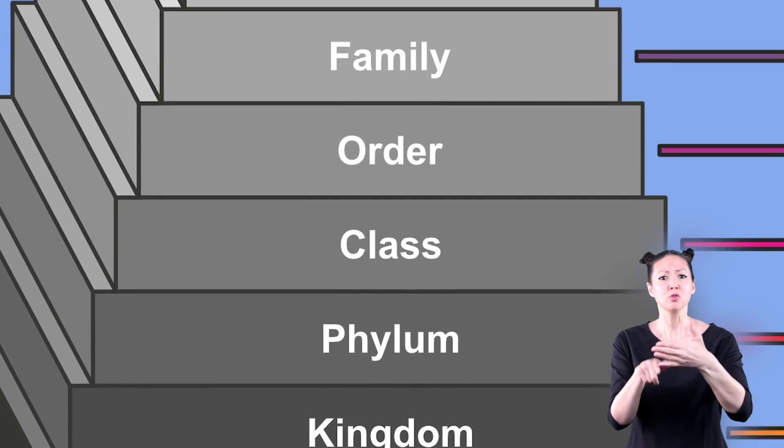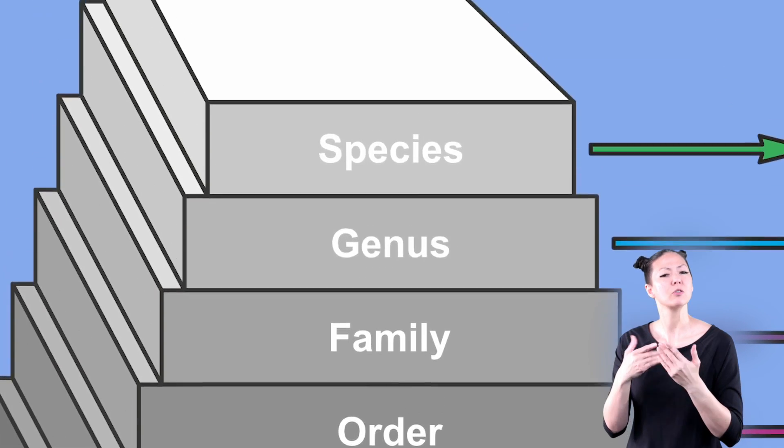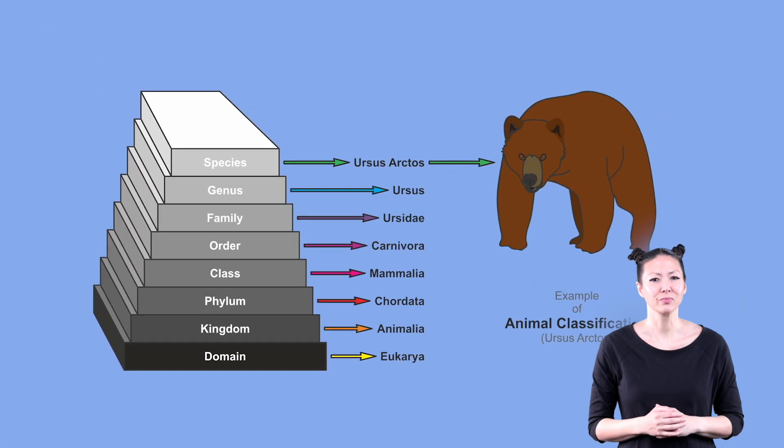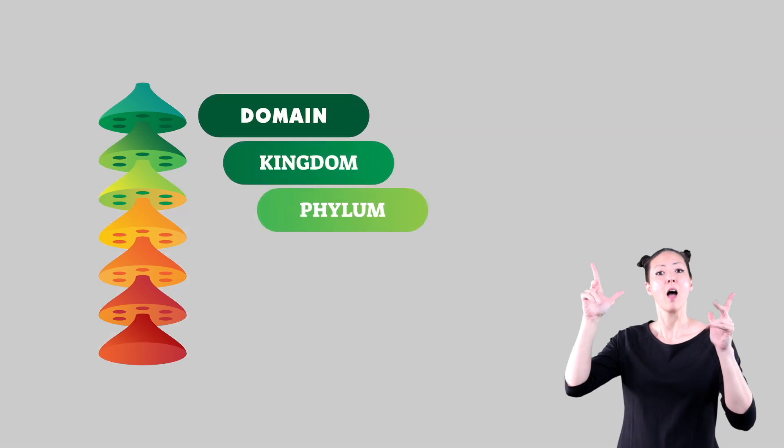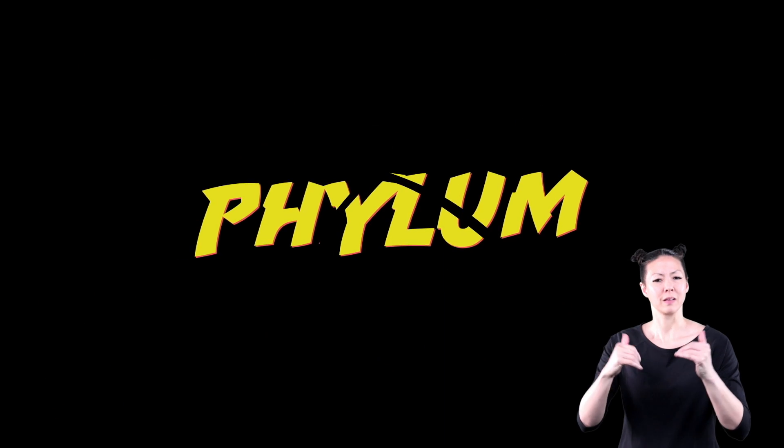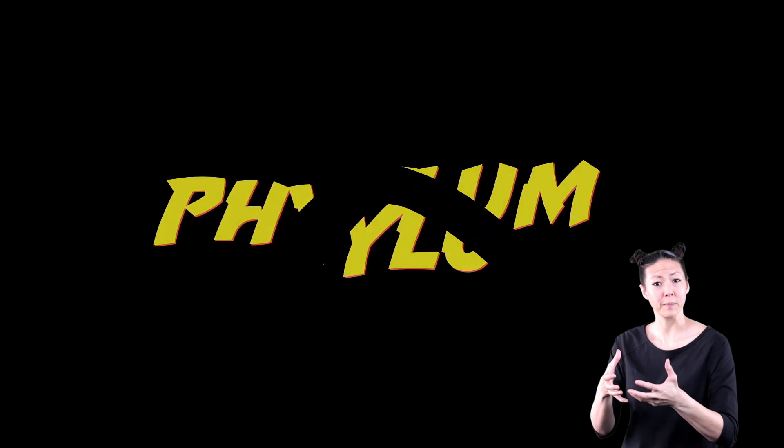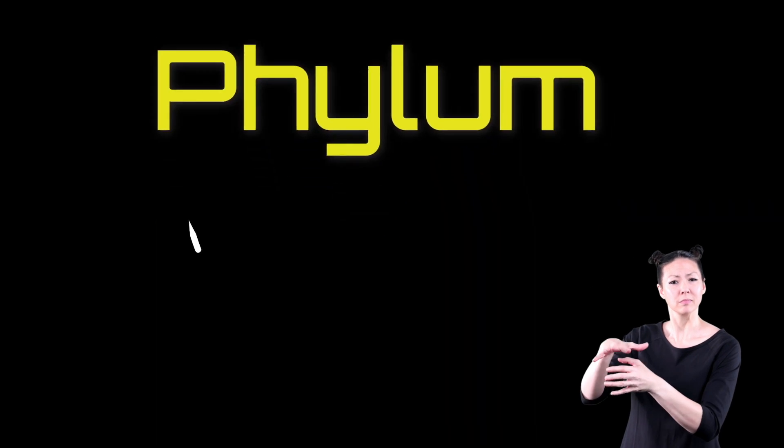An animal classification chart makes a specific animal easier to find as well. Let's look at the next level on our animal classification chart. After the kingdom level is the phylum level. This level is also broken down into more specific groups. One of those groups is chordata.